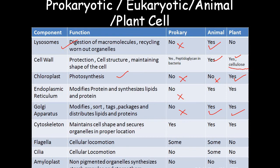Cytoskeleton maintains cell shape and secures organelles in proper locations. It has three types: actin filaments, intermediate filaments, and microtubules. The cytoskeleton is present in both prokaryotic and eukaryotic cells. Flagella, used for cellular locomotion as a motile structure, are found in some prokaryotic cells and some animal cells, but not in plant cells. Cilia are also used for locomotion — not found in prokaryotic cells, found in some animal cells, and not found in plant cells.